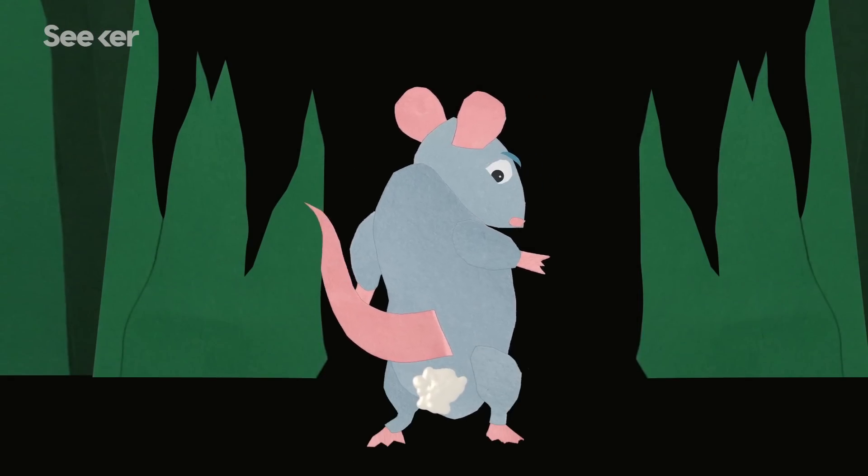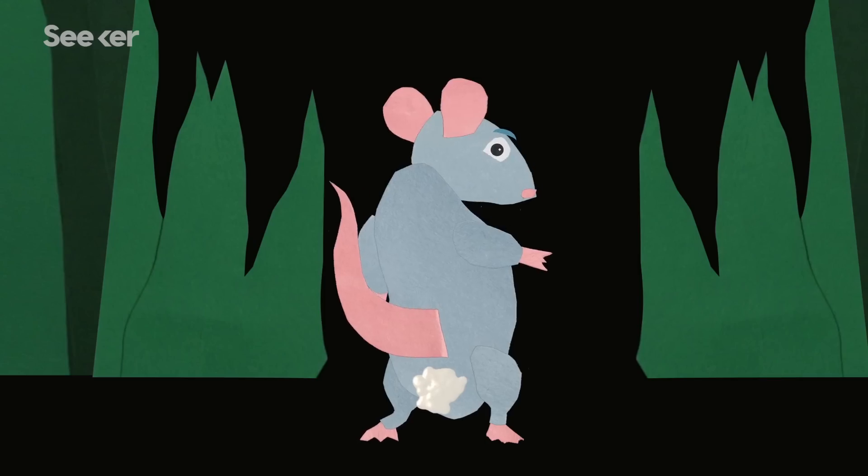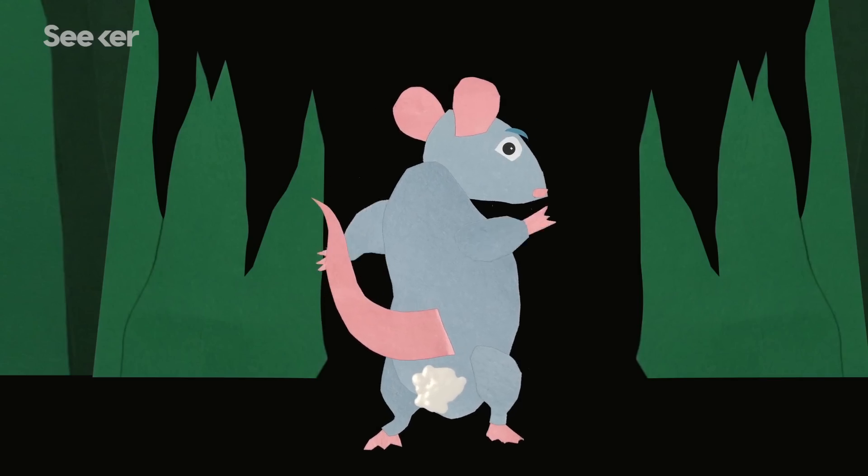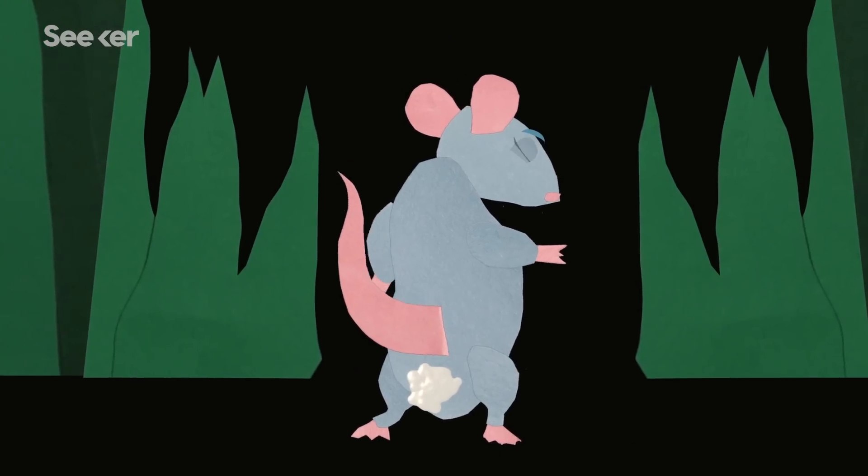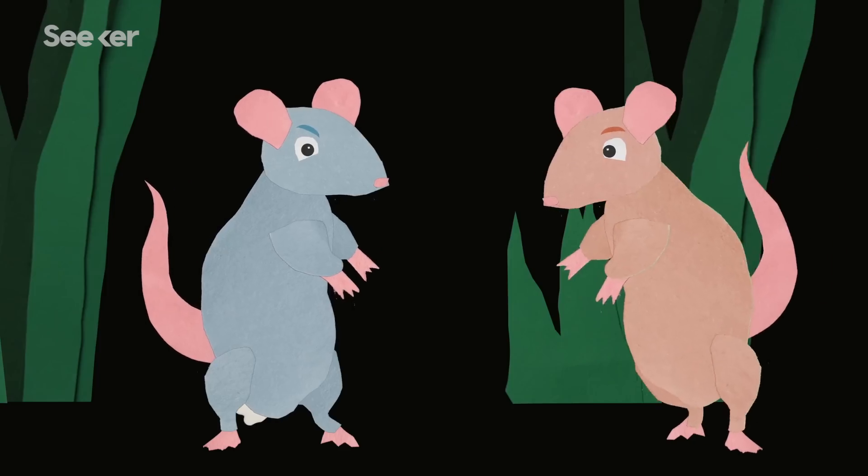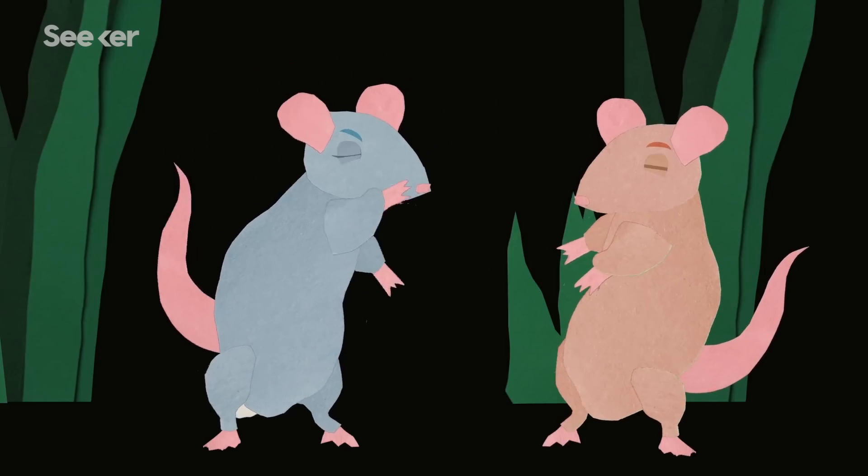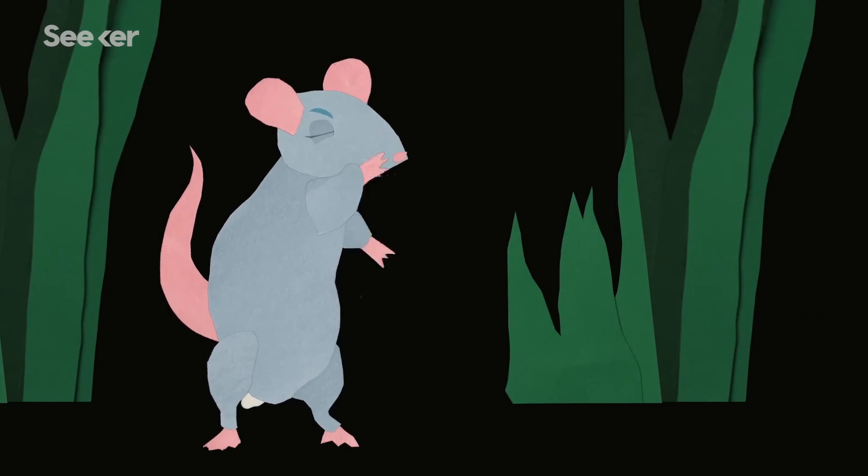As if having your genitals gummed up with some kind of sticky substance wasn't enough, mating plugs can also contain appeasement substances, which are chemical cues that serve to decrease a female's sexual receptivity. In other words, the mating plug works to block a female from future sexual encounters, both physically and psychologically.